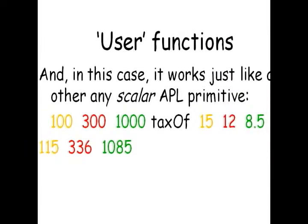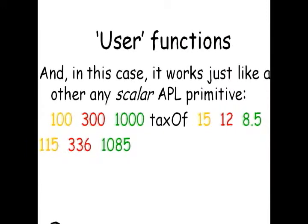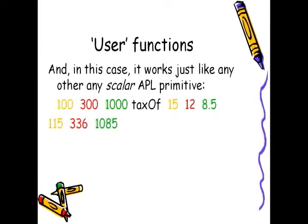And in this case, it works just like any other scalar APL primitive function, meaning that it works one by one. So for example, if we want to know the tax of 100 at 15%, of 300 at 12%, and 1000 at 8.5%, all we have to do is put in the prices on the left, the taxes on the right, and APL will compute all the numbers for us. We've written a function that does something that APL could not do. This is not a primitive function, it is a user function.